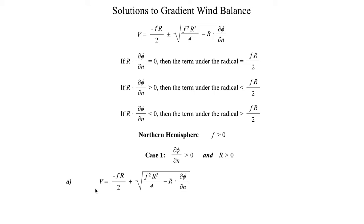Let's take a look at the plus solution. By the logic we derived, the term under the radical is something smaller than F times R over 2. So I have negative F times R over 2 plus something smaller than FR over 2, which gives me a large negative number plus a small positive number — that's going to be negative. Since V can only be positive in our natural coordinate system, this is an unphysical solution to the gradient wind balance.